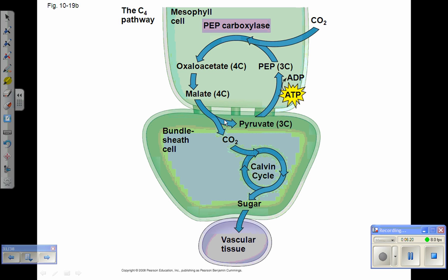Once in the bundle sheath cells, the CO2 is released from the malate. Pyruvate, a three carbon compound, is regenerated. We'll come back to that in a minute.